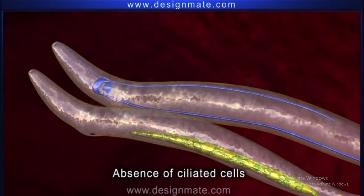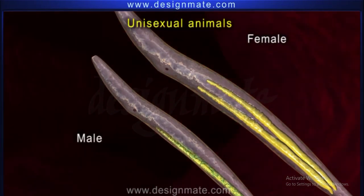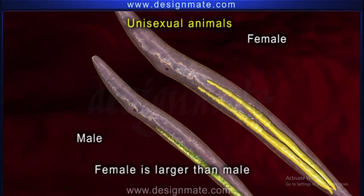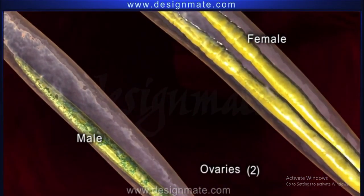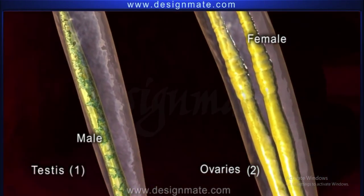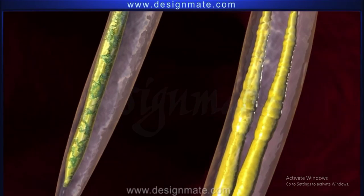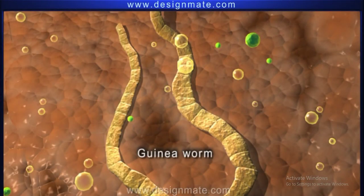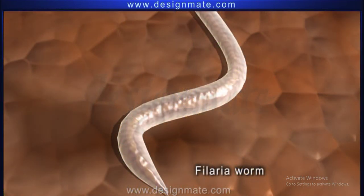The nervous system is simple and consists of nerve ganglia and nerve cords. Ciliated cells are completely absent in their body. These animals are unisexual; the female is larger than the male. There are two ovaries in females and only one testis in males. Their reproductive organs are tubular. Examples include guinea worm, filaria worm, etc.